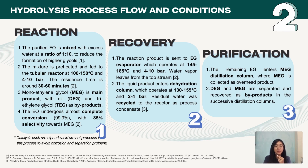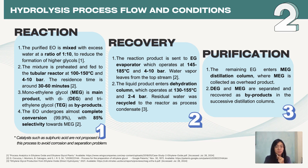After preheating, the mixture enters the tubular reactor at mild conditions of 100 to 150 degrees Celsius and 4 to 10 bar, with a residence time of 30 to 60 minutes. The hydrolysis reaction allows complete conversion of ethylene oxide with 85% selectivity towards monoethylene glycol as the main product, while diethylene glycol and triethylene glycol are produced as by-products.